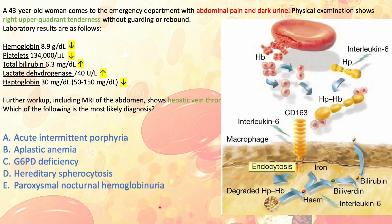Without even finishing the question, I can exclude some answer choices. Acute intermittent porphyria is excluded because it is not a type of intravascular hemolytic anemia, and the same goes for aplastic anemia. We can keep the rest.